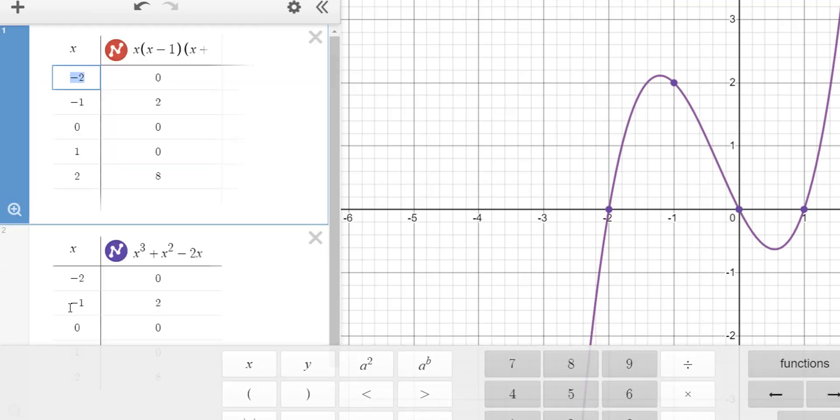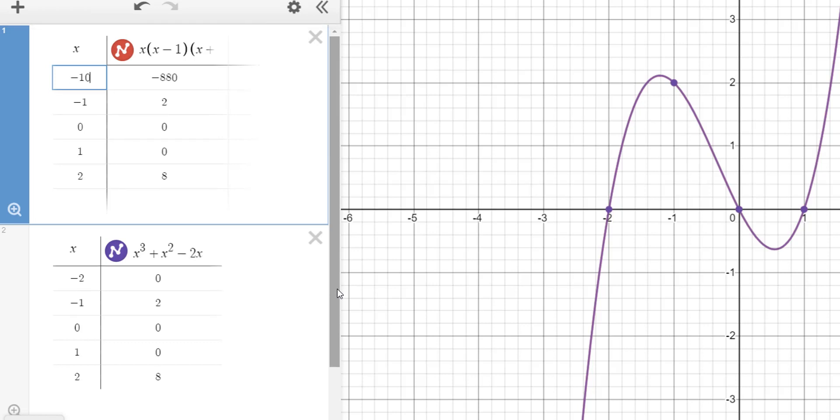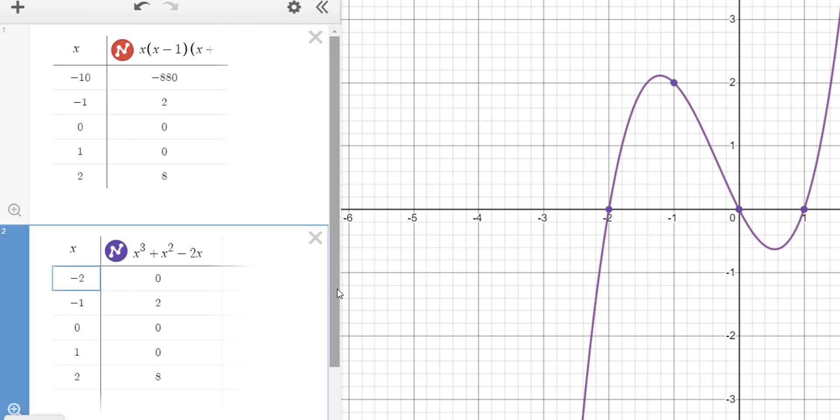So my table of values, let me get that out of the way. So you can see the table of values is the exact same. And if I were to change negative two to say negative ten, I get negative 880. So let me go down to my other function and make that one negative ten. Hey, look, I get the same value.